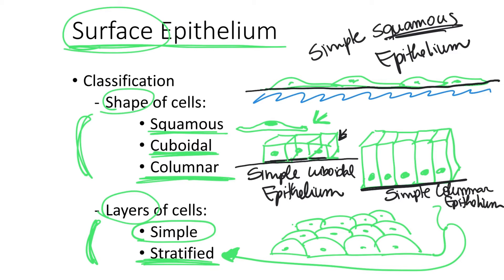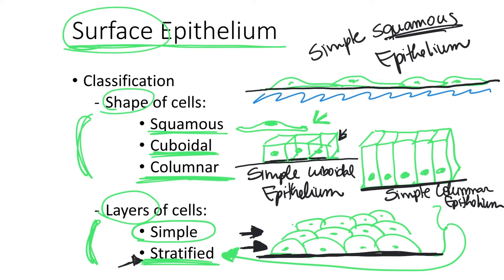When we have several layers of cells, we call it stratified. With the basement membrane in place, you can see that only the bottom layer of cells is touching the basement membrane, while the other layers are far away from it. In any simple epithelium, each individual cell is in contact with the basement membrane. In the stratified version, only the cells at the base of the tissue touch the basement membrane; all other layers on top do not.